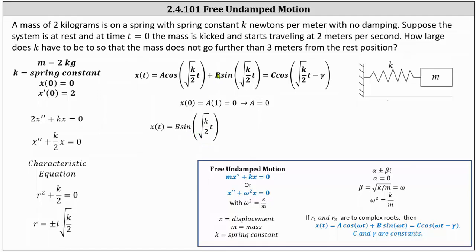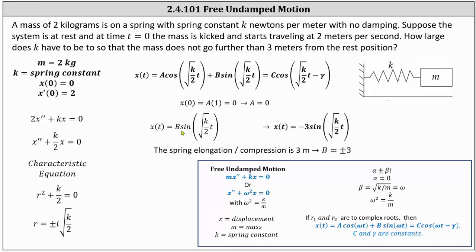Now let's go back and look at the problem. We're looking for how large k has to be so that the mass does not go further than three meters from the rest position. Let's assume the mass goes exactly three meters from the rest position — then the amplitude of the sine function would have to be three. This indicates b can be either positive three or negative three. We're not told what direction the mass is kicked. If kicked toward the wall we use b equals negative three; if kicked away from the wall we use b equals positive three. I'll use b equals negative three, but it doesn't really matter.